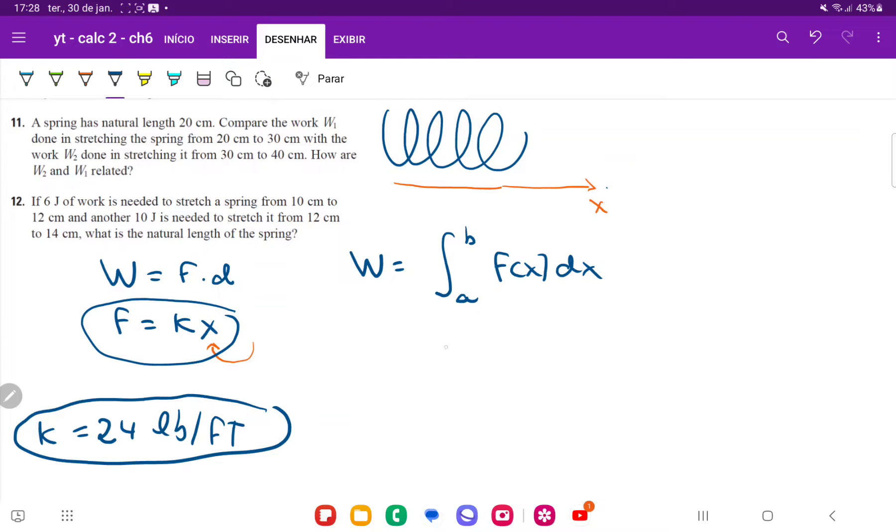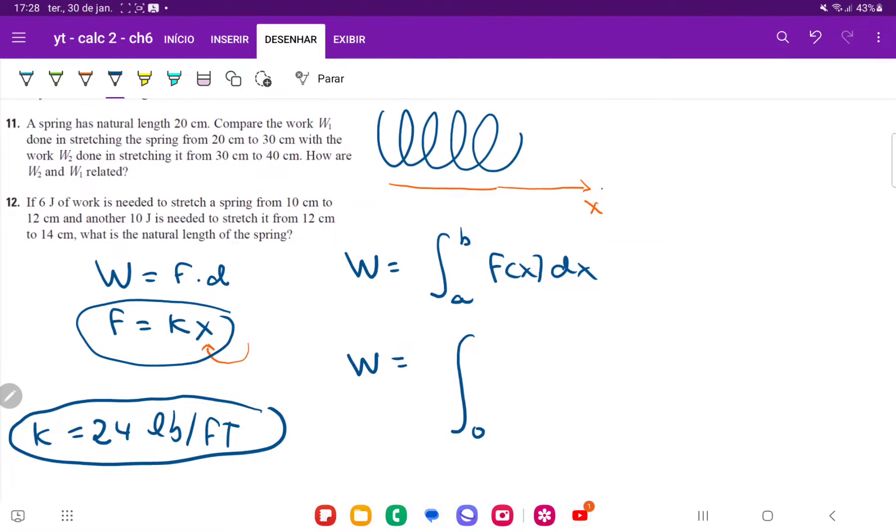So now we're looking to stretch from zero, which is its natural length, up to nine inches, but we're in feet. So we have to convert nine inches to feet. And since there are 12 inches in a foot, nine inches is just three quarters of a foot. So we have to convert that so that we have the same units. And then we're integrating f of x dx, and remember that f of x is just k times x dx.